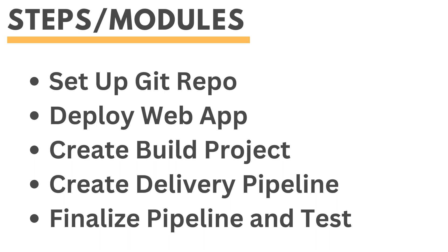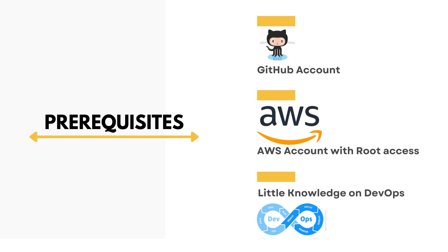All the steps involved and all the links you need will be in the description so you can follow that. Also make sure to follow the video to the end so you can understand it completely and implement it on your system. The prerequisites for this are: a GitHub repository, an AWS account with root access, and a little bit of DevOps knowledge. With that being said, let's get started.